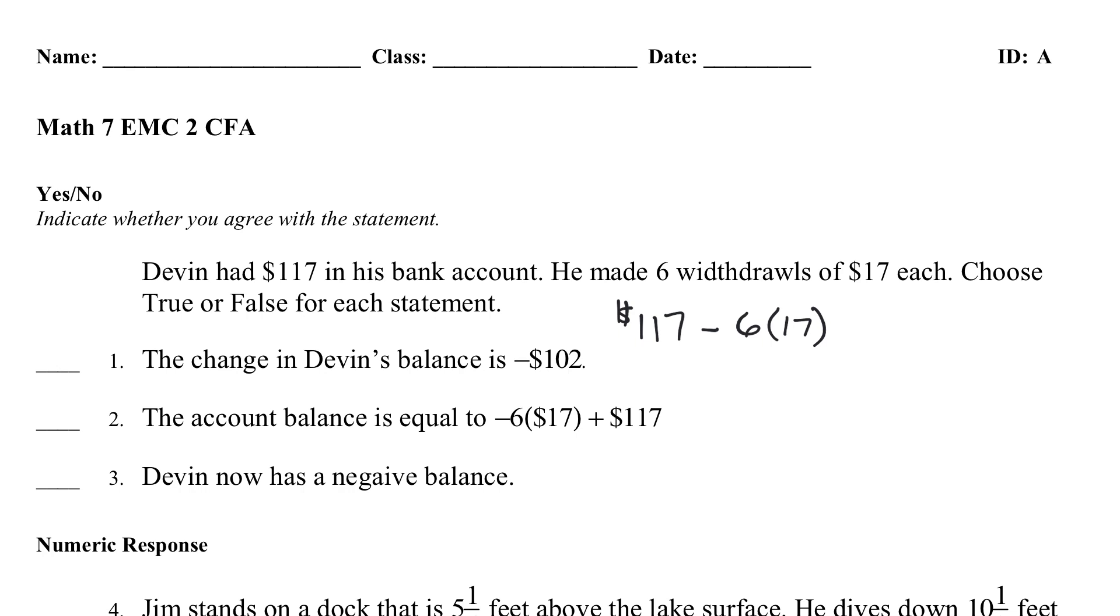Let me do that over here. 17 times 6 is 42. That's $102. So, that would be $117 minus $102. What is that? That's $15.